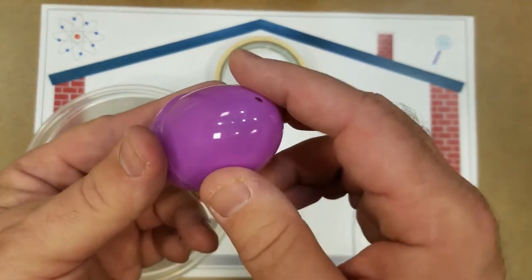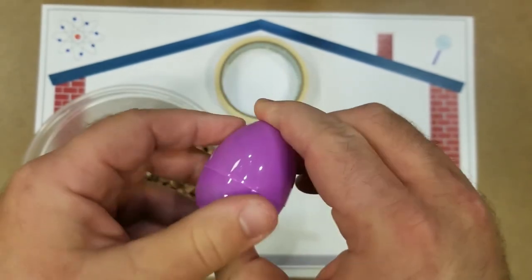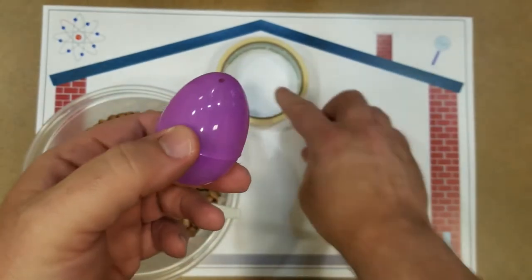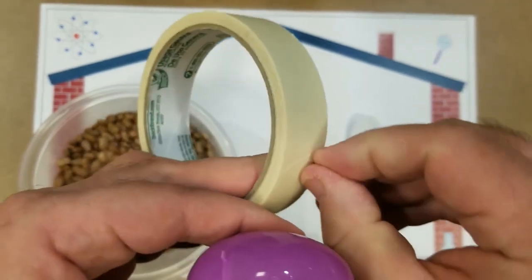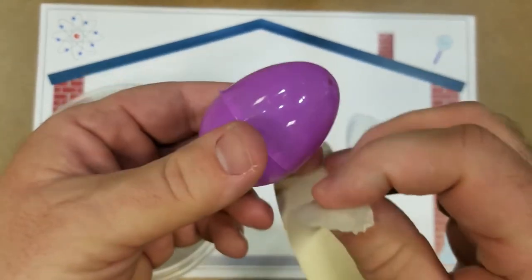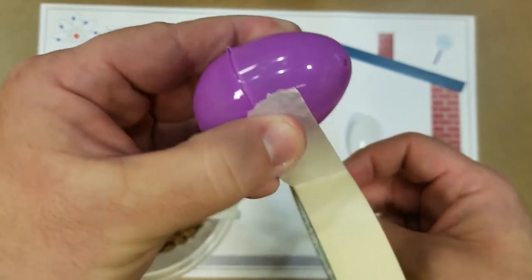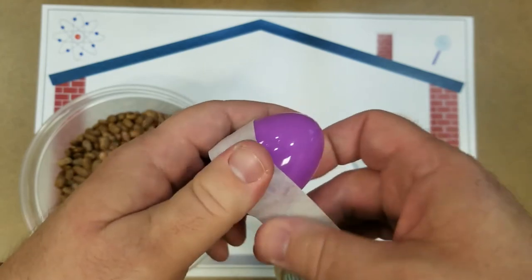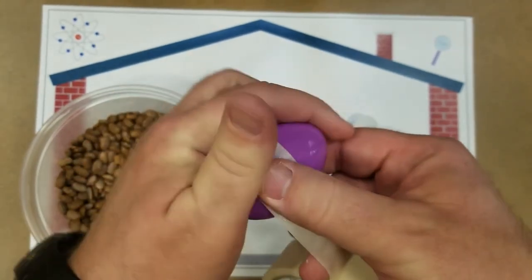Now we don't want our egg to pop open on us, so we're going to tape it up. Now I'm going to use masking tape because that's what I had around in my science supplies. If you had some decorative tape, you could use that.